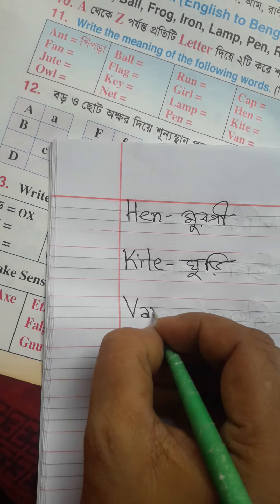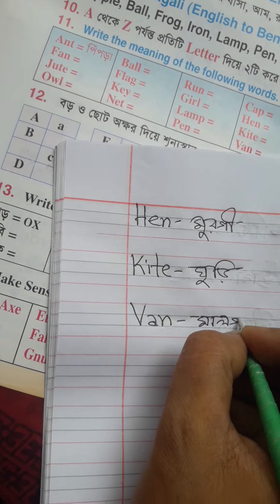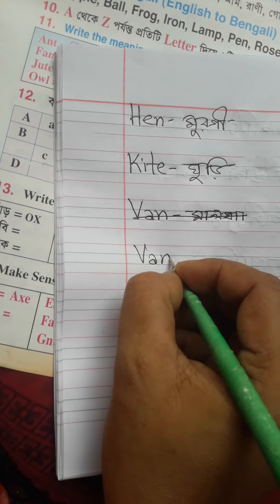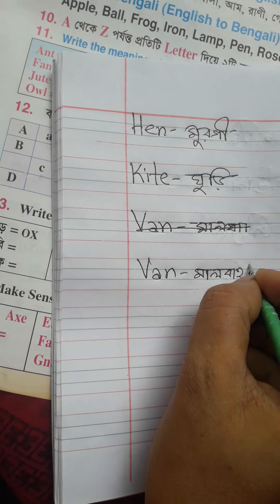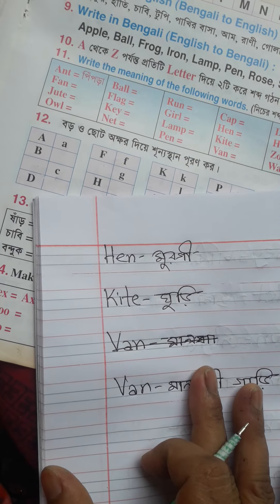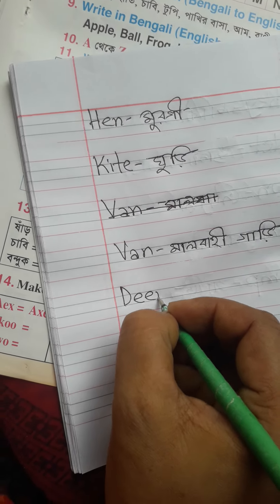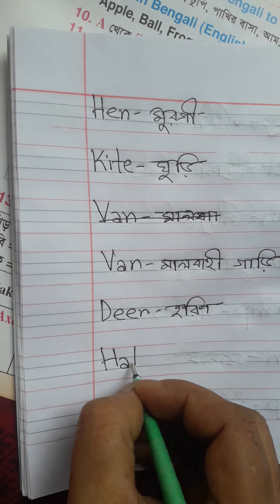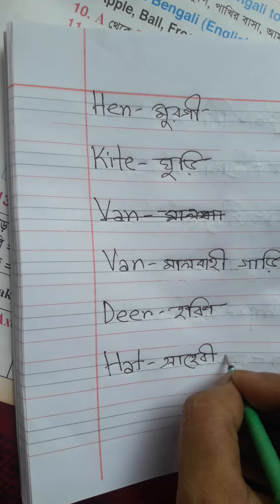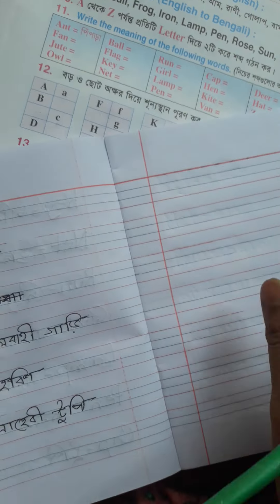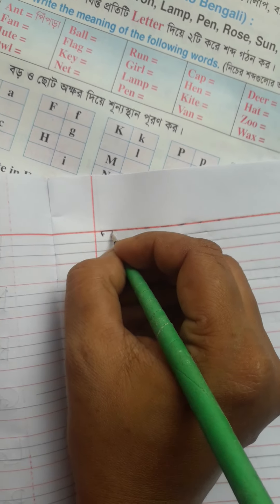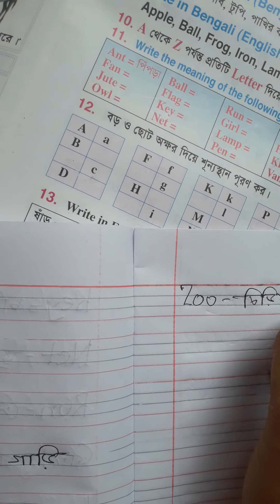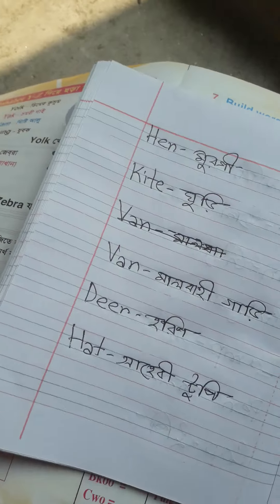Van, V A N, van, અર્થ માલ-બહી ગાડી. Deer, D E E R, deer, અર્થ હોરિણ. Hat, H A T, hat, અર્થ શાহી ટૂપી.